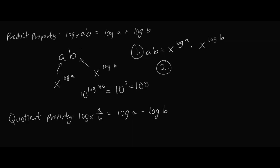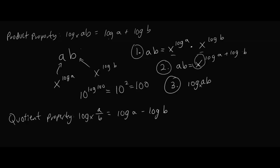The second step uses exponent properties. So A times B equals x to the power of log A plus log B, since x is the like term. For the final step, we take the log of each side to cancel out x as the base. So log AB, with x as the base, is just going to be equivalent to log A plus log B. And that is our product rule.